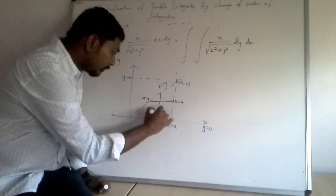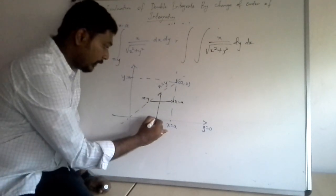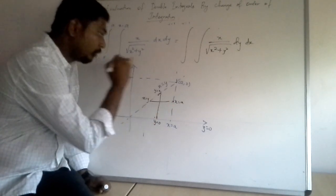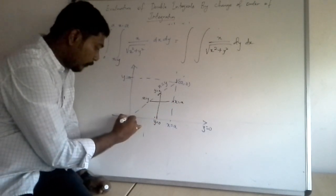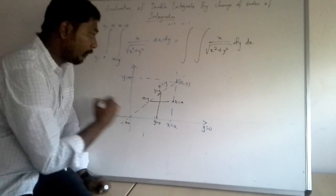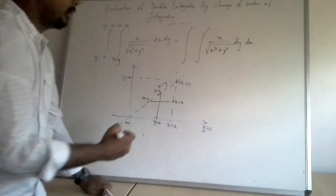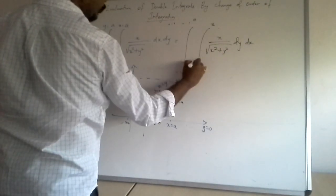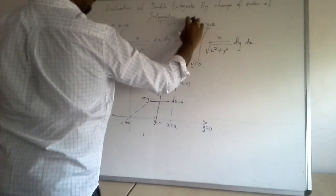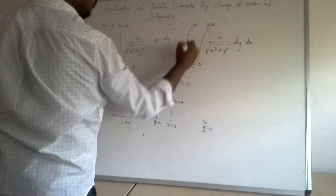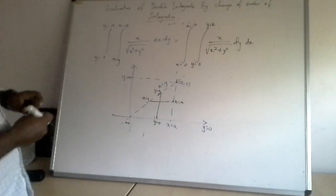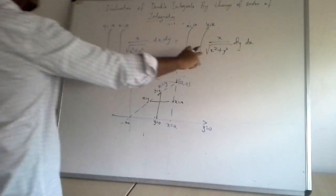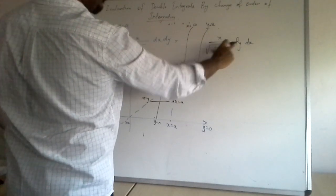Now I have to change my limits. The lower boundary is y = 0, the upper curve is y = x, and x runs from 0 to a. So the limits will become: y from 0 to x, and x from 0 to a. The limits for x and y have now been swapped, so I integrate first with respect to y and then with respect to x.